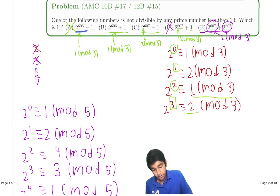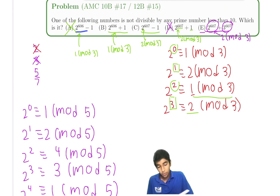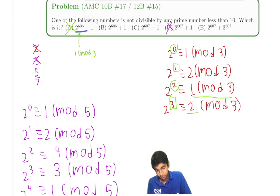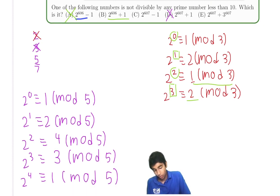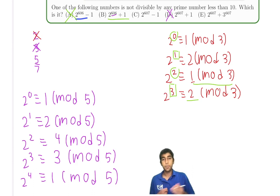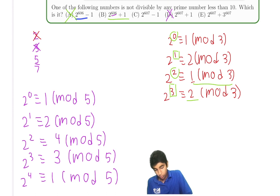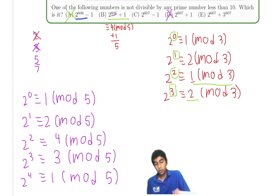We've already eliminated two choices, so let's check the remaining ones mod 5. For 2^606 plus 1: 606 leaves remainder 2 when divided by 4, so 2^606 is the same as 2^2, which is 4 mod 5. Adding 1 gives 5 mod 5, which is a multiple of 5 — we can cross that out.